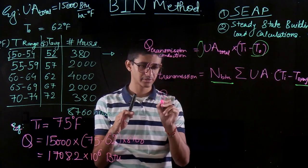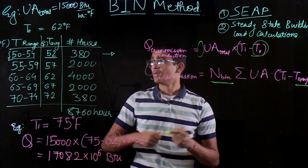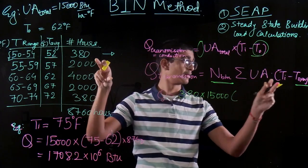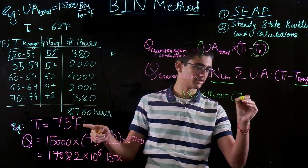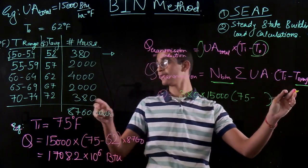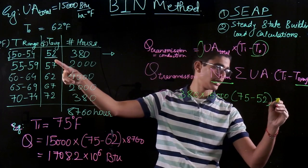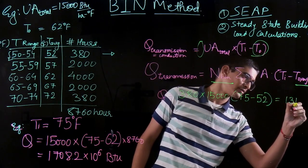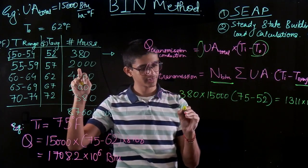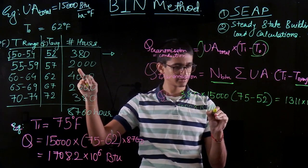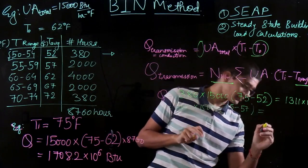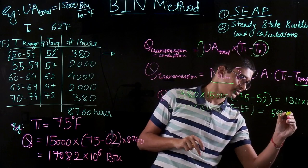Now using the BIN method: for the first bin, Q = 380 hours × 15,000 BTU/(hr·°F) × (75 − 52) = 1,313.0 × 10⁶ BTU. Wait — that comes out to 131.1 × 10⁶ BTU. For the next bin: Q = 2,000 × 15,000 × (75 − 57) = 540.0 × 10⁶ BTU.